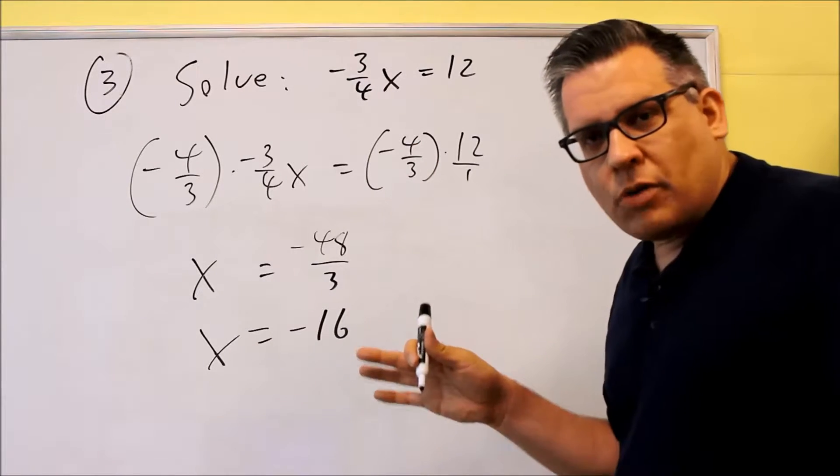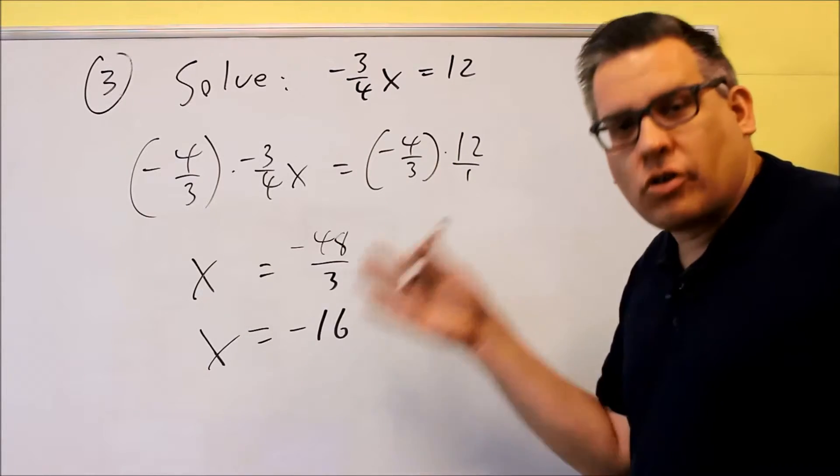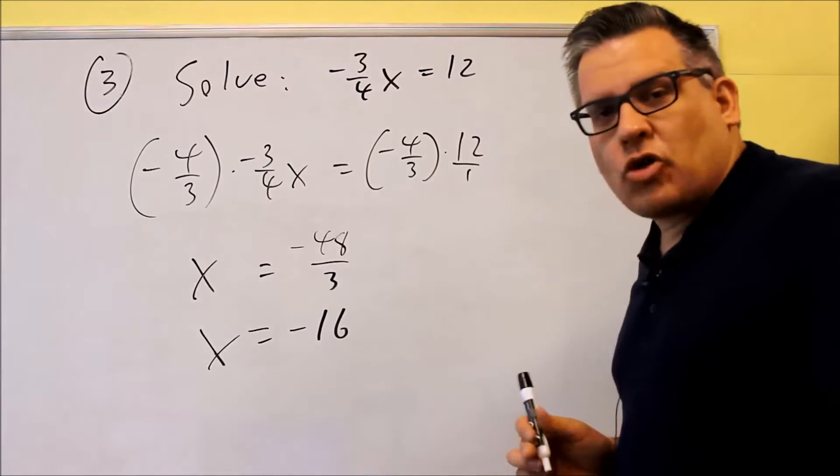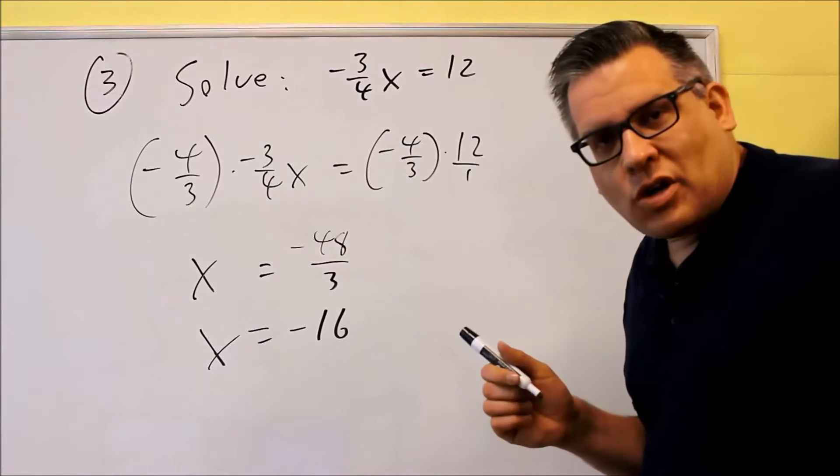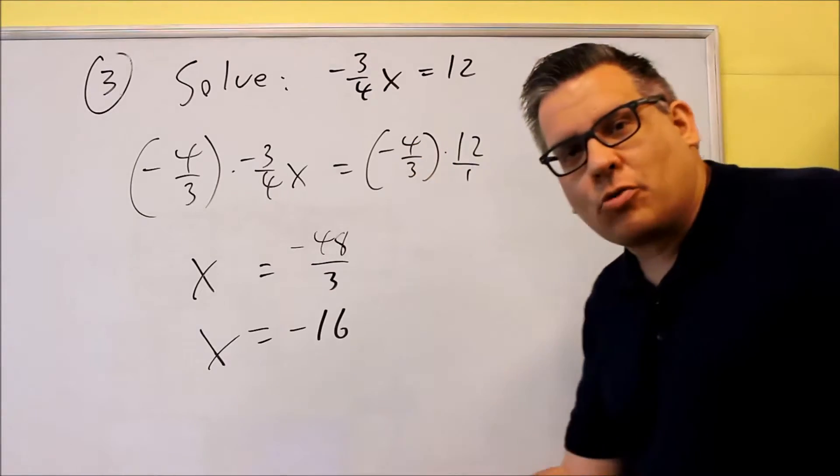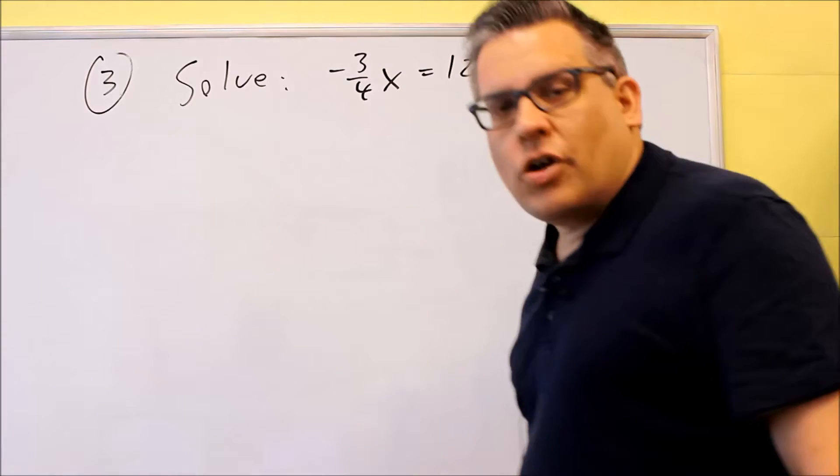But let me show you another method of doing this. If this one is too confusing for you, you want another method. The other method goes back to what I did in the first problem, where I cleared out the fractions by multiplying both sides by the common denominator. We're going to do that approach next. So we'll do the same problem over again, but this time we'll do a different approach.